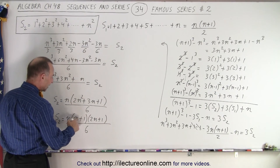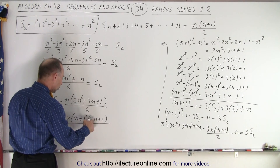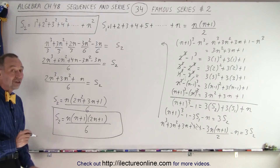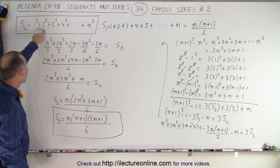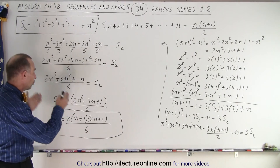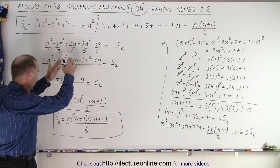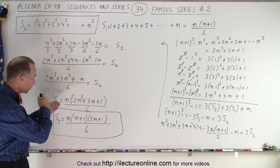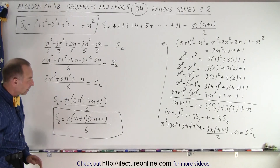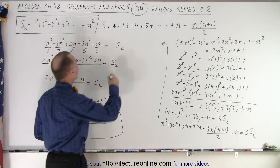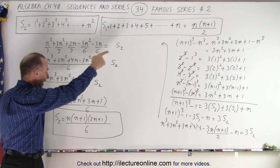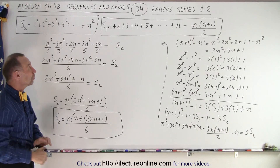Notice if I multiply this out: n times 2n is 2n squared, n times 1 plus 2n times 1 gives 3n, and 1 times 1 gives 1. This is ultimately the equation we were looking for: 1 squared plus 2 squared plus 3 squared plus 4 squared, which is S2, equals n times n plus 1 times 2n plus 1 over 6. This is the famous series number 2. Now we have handy equations for both series number 1 and series number 2, allowing us to solve for any partial sum.